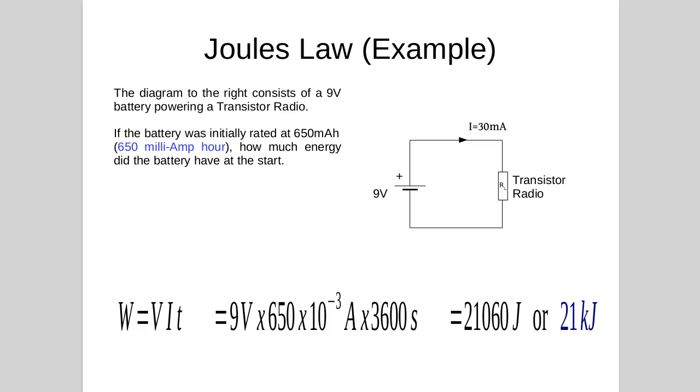So if we substitute that in, W equals V by I by time, we have 9V times 650 by 10 to the minus 3A times 3600 seconds or one hour. That gives us 21,060 joules or 21 kilojoules, 21 by 10 to the 3 joules.